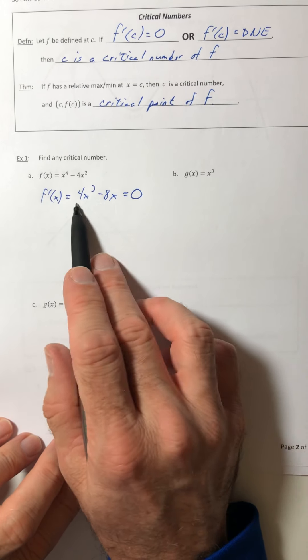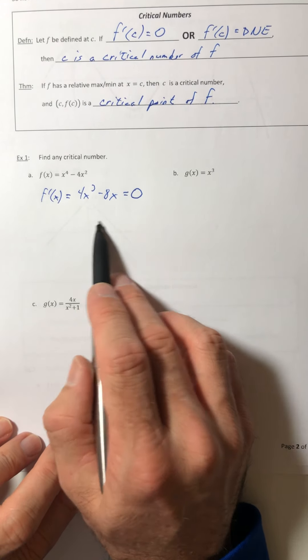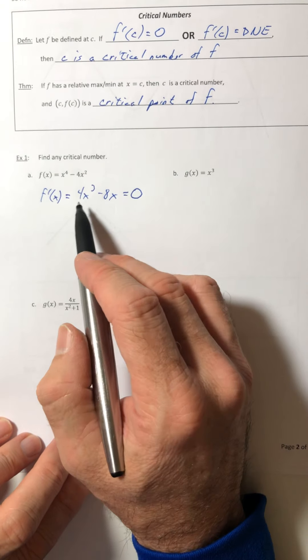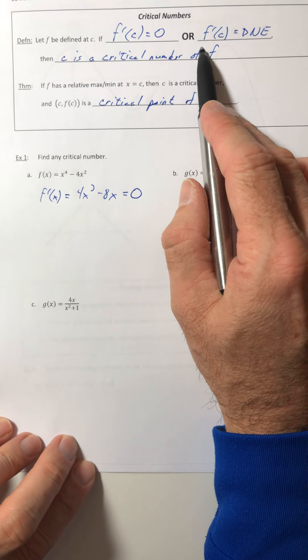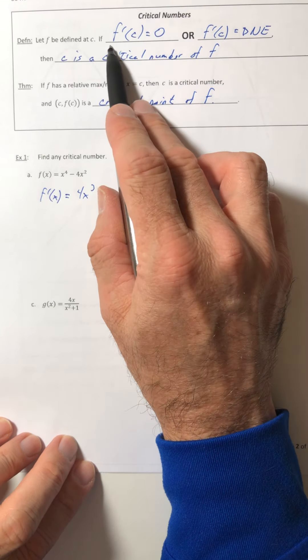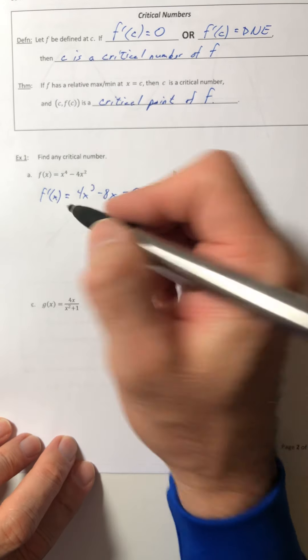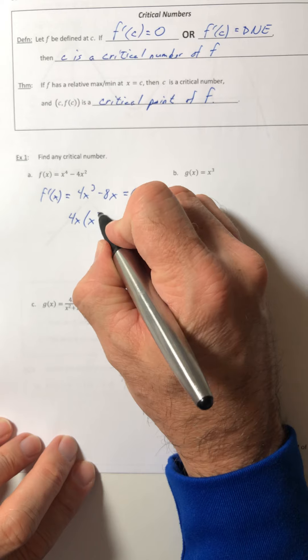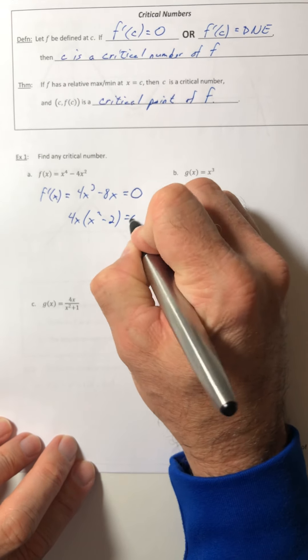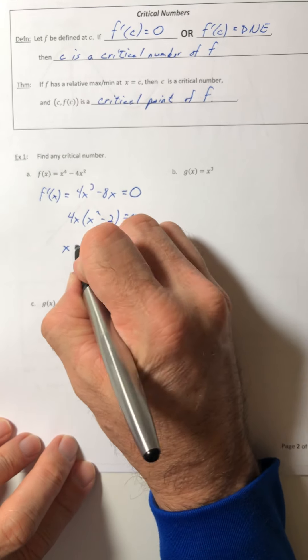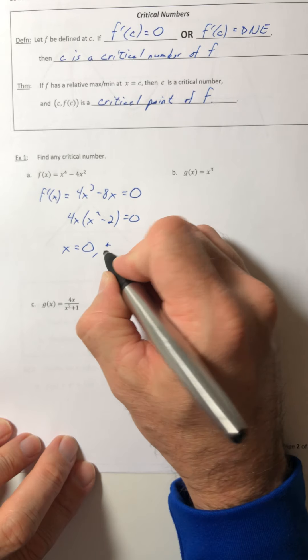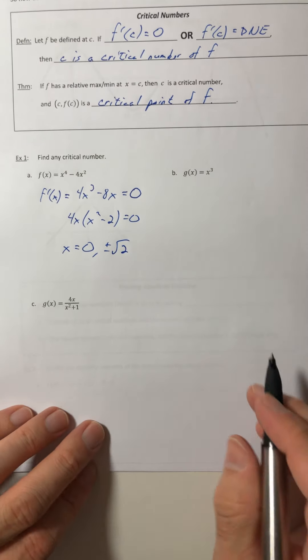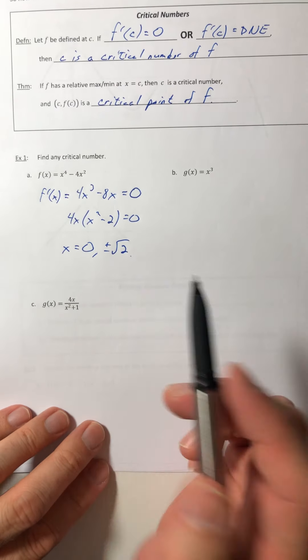So with this one, there's nothing that makes it undefined. Like you don't have a fraction involved. So there's nothing that's going to make this case. So it's just for where it equals zero. So just pull out a 4x. So x is going to equal zero, and plus or minus the square root of two. And those would be your critical numbers.